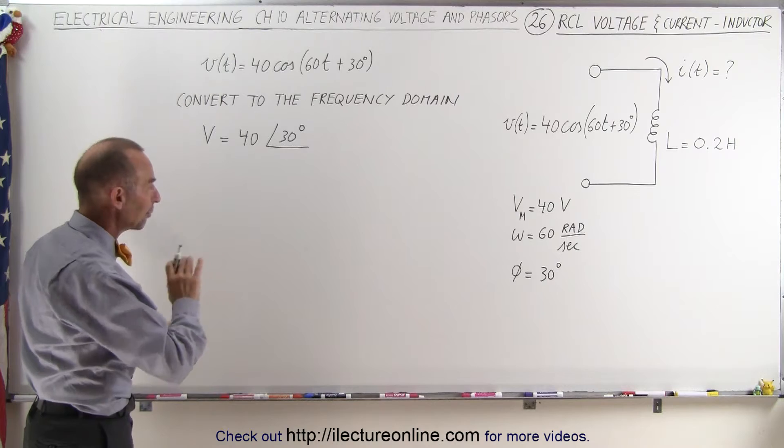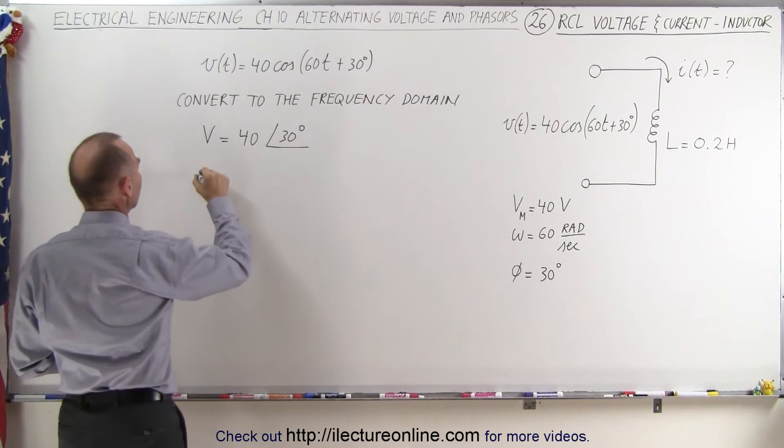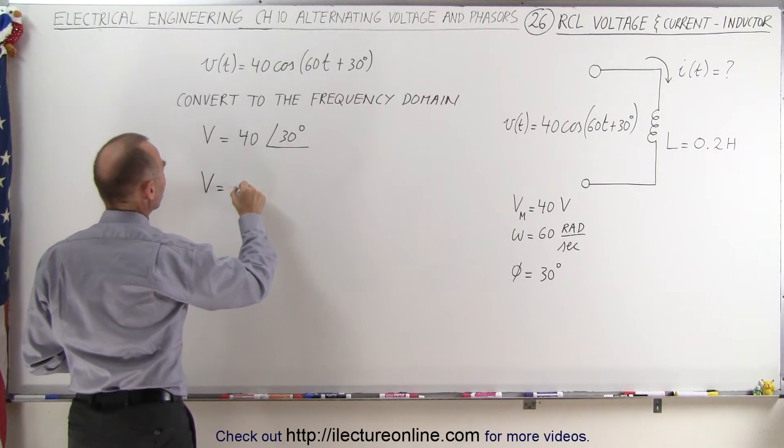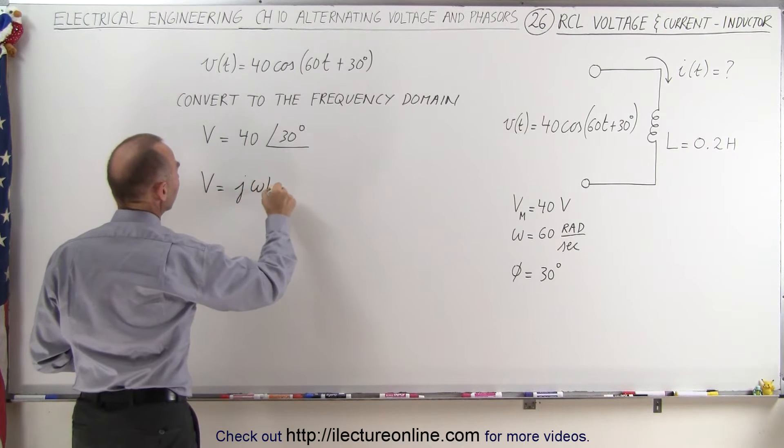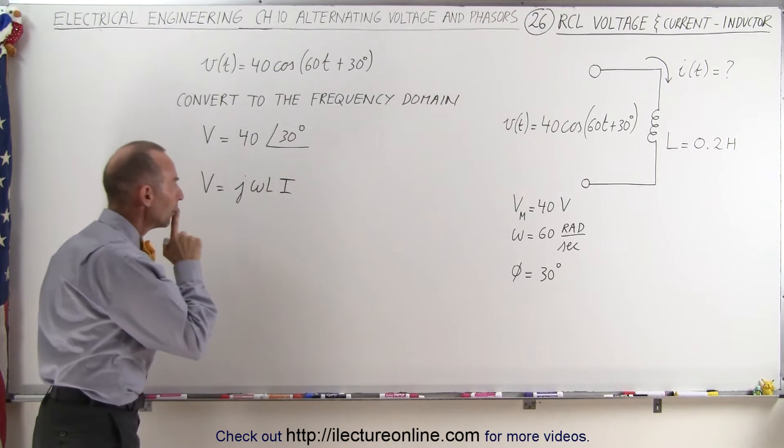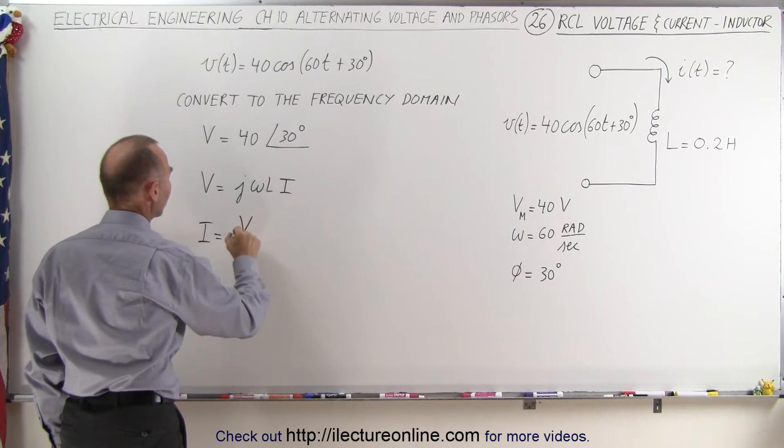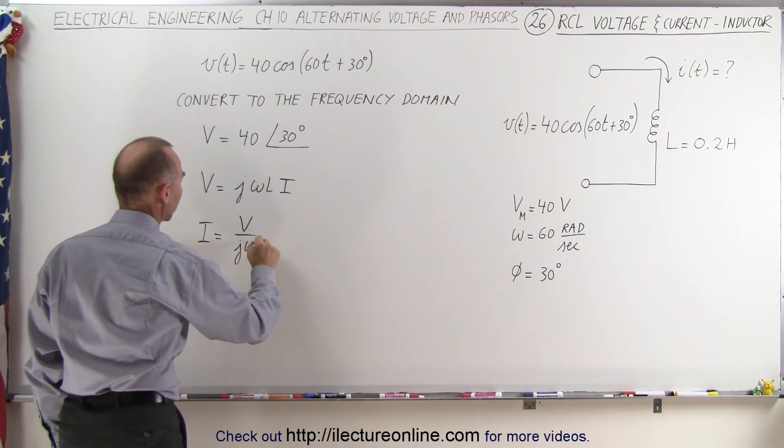Next, we need to have a relationship between the voltage and the current in the frequency domain, and we've learned that the voltage is equal to j times omega L times the current in the frequency domain, which means that we can solve this equation for the current. That means I is equal to V divided by j times omega L.